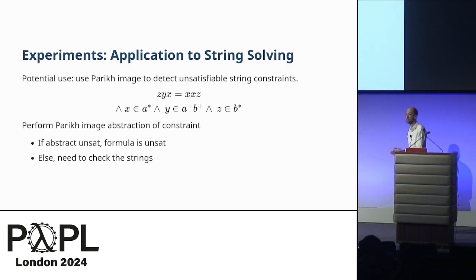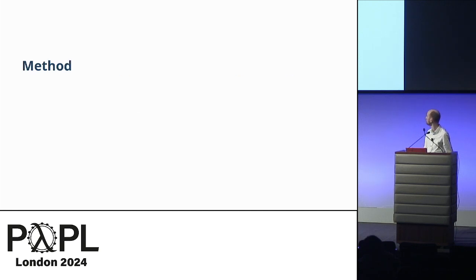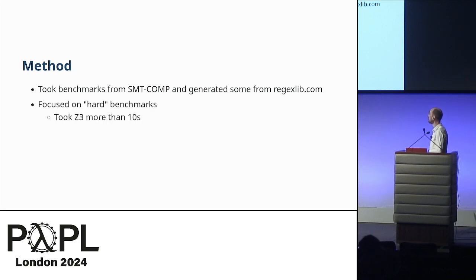We did some experiments to see the usefulness of this approach. We applied this to do some string constraint solving. We took, for example, here's the constraint we had before, and we encoded all of this as symbolic automata. Then we applied our Parikh image, and then we saw whether the unsatisfiability was still witnessed. The idea was we took some benchmarks from the SMT competitions, and we also generated some of our own using regular expressions from regexlib. We focused on hard benchmarks, so by hard we mean Z3 took more than 10 seconds. The reason we did that is because this is an approximate technique. It won't replace a string solver, but it's potentially a technique a string solver could use to try and dispatch some cases before getting into the meaty string stuff.